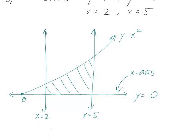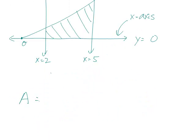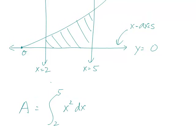And this area is just the definite integral of the function y equals x squared dx from x equals two to five. So it's a definite integral. Remember that definite integrals give you the area below the curve and above the x-axis.